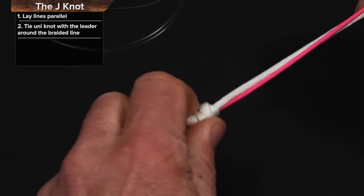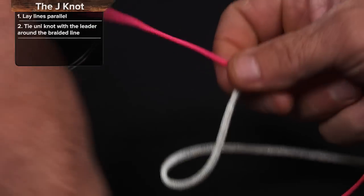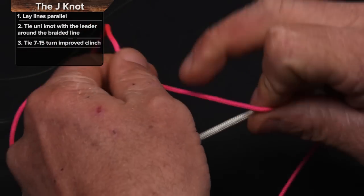Okay, and then on this side, you could tie another uni knot here for a double uni, but what I prefer to do is to tie an improved clinch. So I'll move it over here.